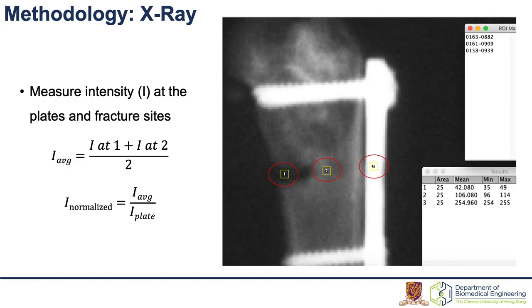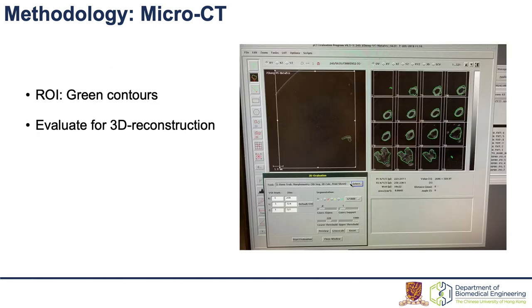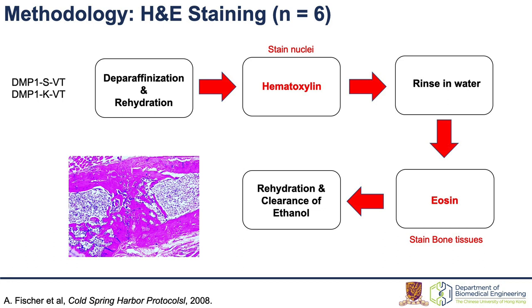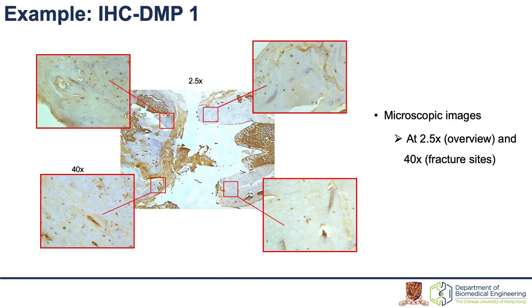Using image software, intensities at the plates and fracture sites were measured to obtain normalized intensity. After X-ray, plates and screws were removed to prevent artifacts during micro-CT scan. Contours were used to select the fracture regions for 3D reconstruction analysis. H&E staining is a standardized method to visualize cellular structures — hematoxylin for nuclei and eosin for bone tissues. IHC staining was used to specifically target DMP1 protein. Primary antibodies were DMP1-specific and secondary antibodies were universal, to increase sensitivity and amplify signals, since multiple secondary antibodies can bind to one primary antibody. Images at the fracture sites were taken for cell counting.